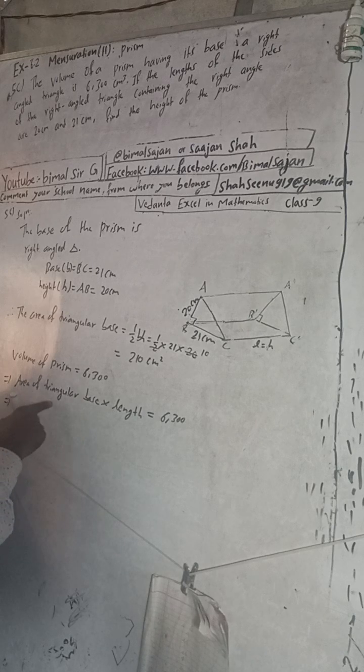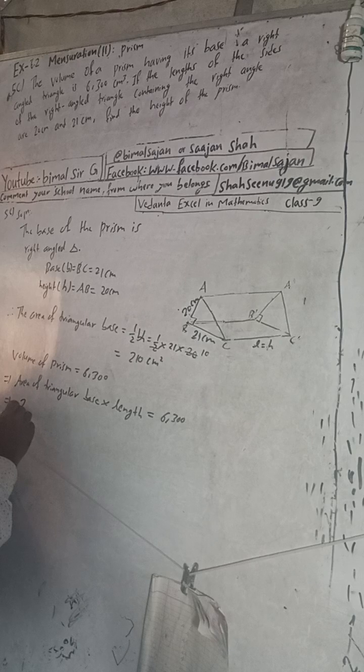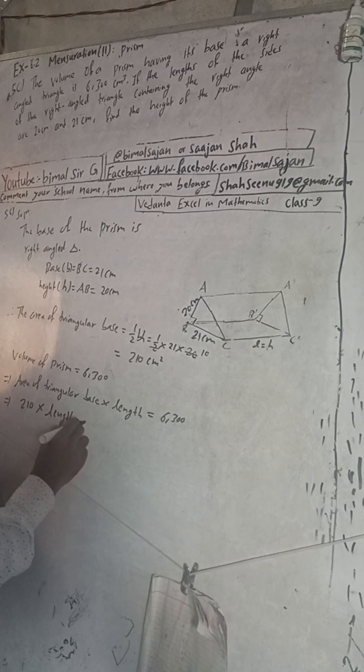Now when we solve this, area of triangular base is how much? Area of triangular base is 210, into this length, is equal to 6,300.